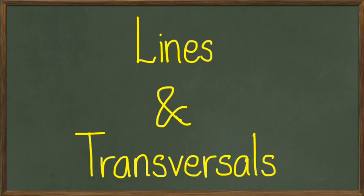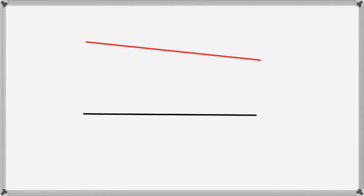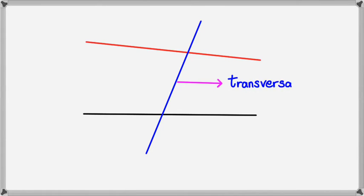Hey folks, we're going to be looking at lines and transversals in this session. We've got two lines — they're not necessarily parallel, just any two lines — and we run another line through these two other lines. This little blue line is known as a transversal.